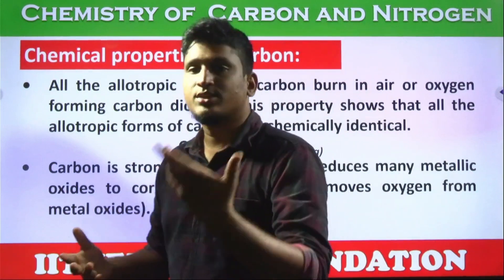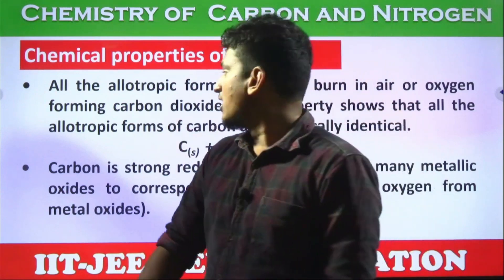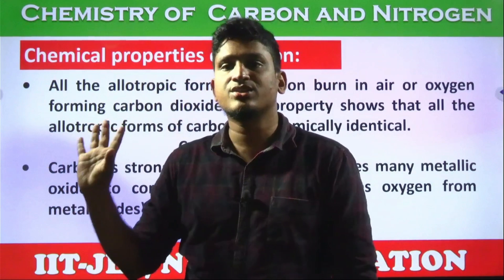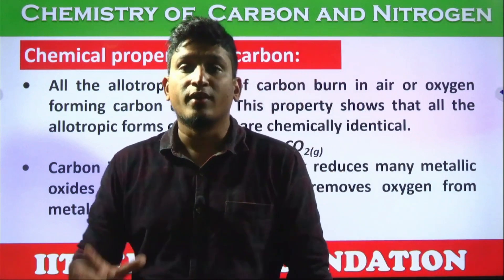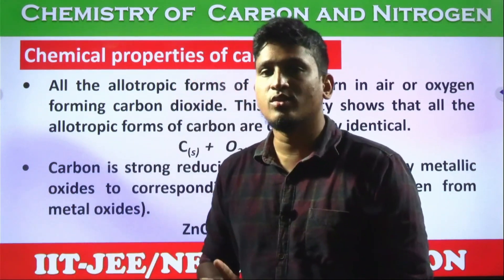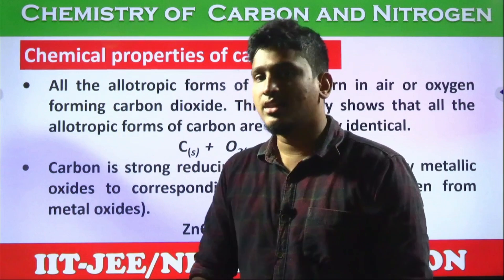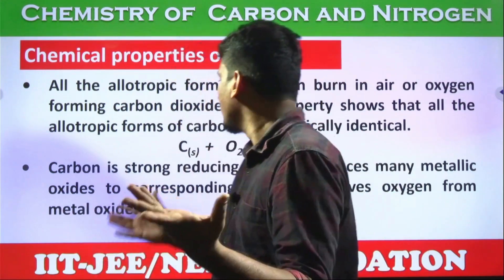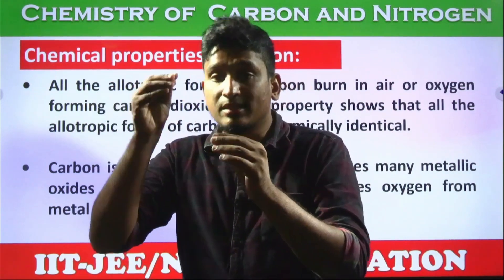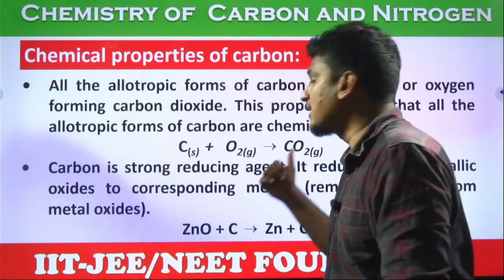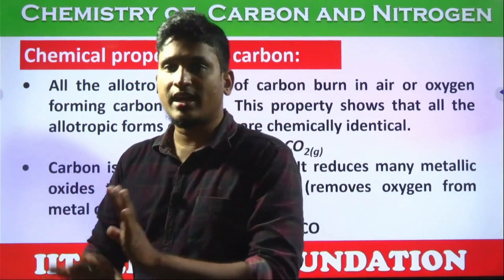Now for the chemical properties of carbon. All allotropic forms of carbon burn in air or oxygen to produce carbon dioxide. Burning of carbon is a reaction we rely on in our everyday life. From coal and petroleum products like petrol, diesel, and kerosene — we burn these for energy. The carbon in these petrochemicals reacts with oxygen and produces carbon dioxide, CO2 gas.